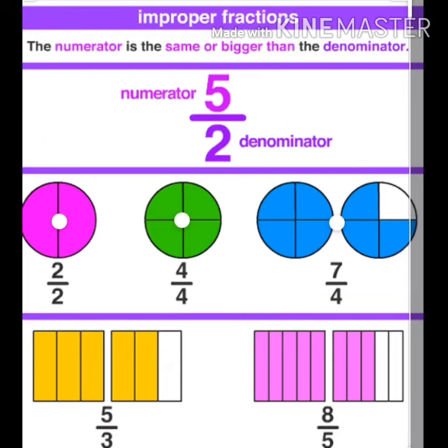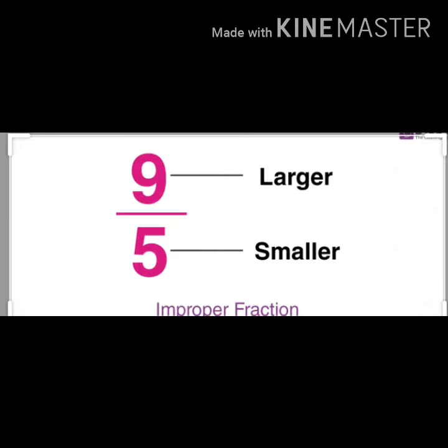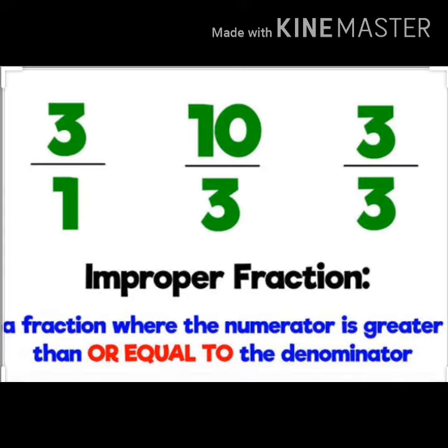Next we will learn about Improper Fraction. Fractions where the numerator is greater than the denominator are called Improper Fractions. In other words, the numerator number is larger than the denominator number.